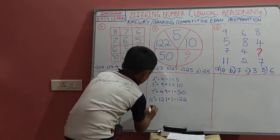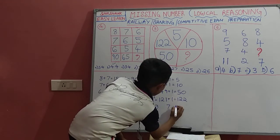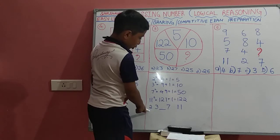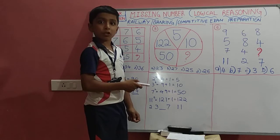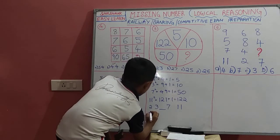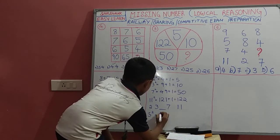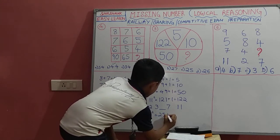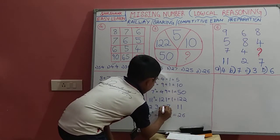So the numbers are 2, 3, 7, and 11. We have to find the number that is missing. 2, 3, 7, and 11 are prime numbers. Prime numbers means they have factors of 1 and the number itself. So the missing number is 5. And 5 squared is equal to 25, plus 1 is equal to 26.